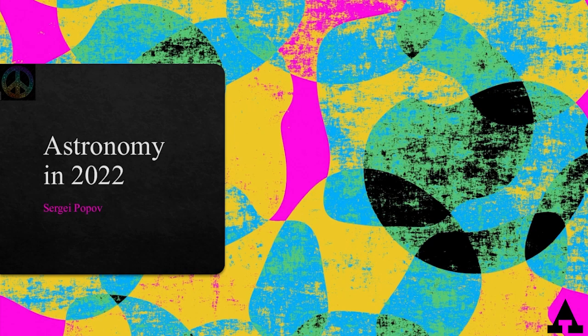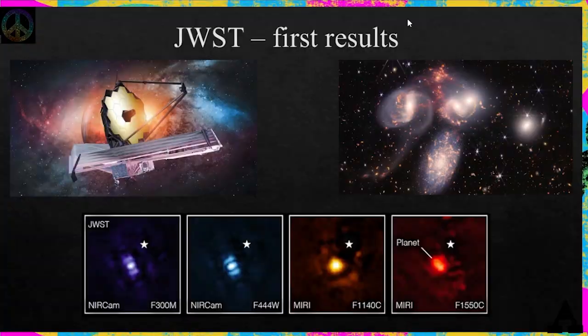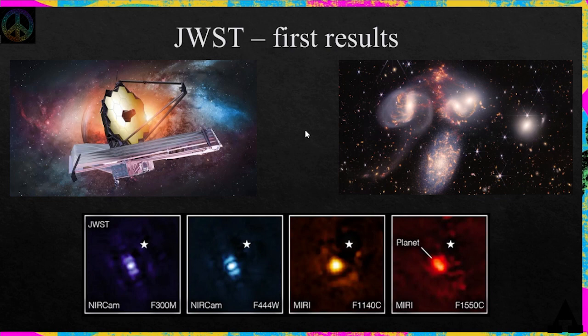Hi! In this short lecture I want to present my personal choice of some interesting astronomical results obtained in 2022. Definitely in history we'll remember this year in astronomy as the year when the James Webb Space Telescope started to produce its first results. I just want to start with mentioning that in 2022 the most interesting results were related to galaxies and to exoplanet studies.